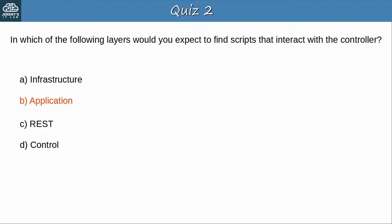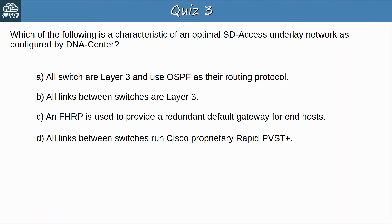Quiz question 3: Which of the following is a characteristic of an optimal SD Access underlay network as configured by DNA Center? The answer is B — all links between switches are Layer 3. This means that spanning tree is not needed, and no links will have to be disabled because there is no risk of Layer 2 loops.